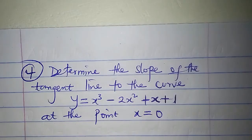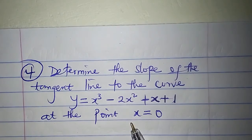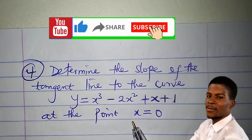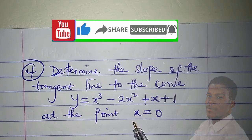Your job now is to determine the slope of the tangent line to the curve y = x³ - 2x² + x + 1 at the point x = 0. Solve it and drop your answer in the comment section, and I will review it. I will see you in the next video — keep supporting by subscribing to this channel, liking the video, and sharing with your friends and course mates.